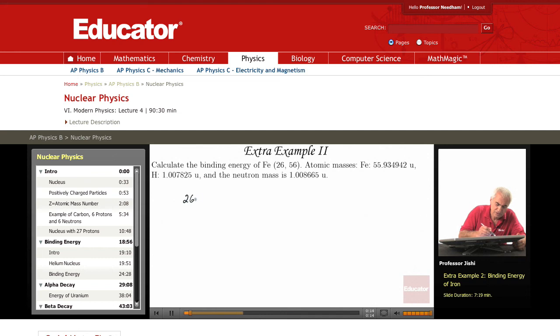Protons and 56 nucleons in all, so 30 neutrons. So Fe is 26-56 like that, so there are 26 protons and 30 neutrons. So how do I find the binding energy? If I take the Fe nucleus and then we add the binding energy to it, what should I end up with?